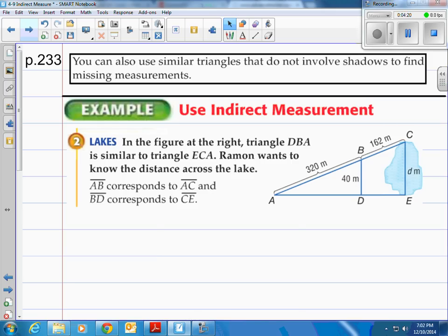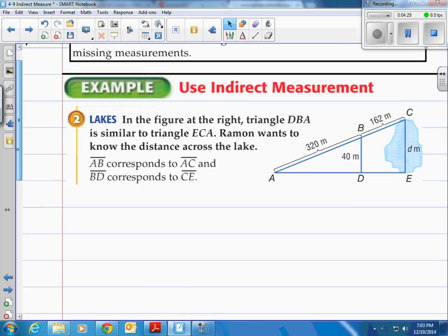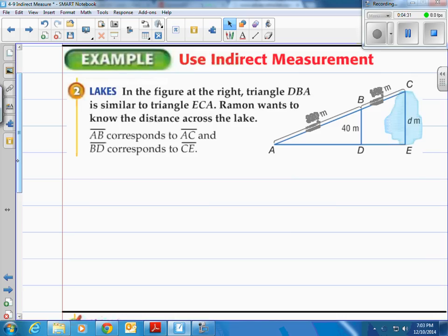In the figure at the right triangle DBA is similar to triangle ECA. Raymond wants to know the distance across the lake. Well he's got some information and all that's going to be very helpful where we actually don't have to stretch over this lake. We can actually just use the triangles to figure it out.